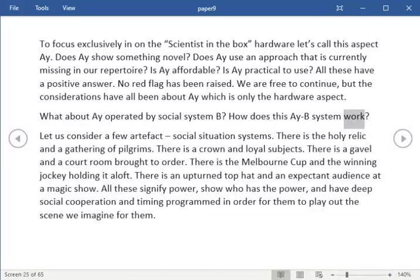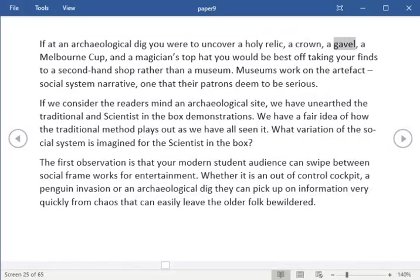Let us consider a few artifact social situation systems. There is the holy relic and a gathering of pilgrims. There is a crown and loyal subjects. There is a gavel and a court room brought to order. There is the Melbourne cup and the winning jockey holding it aloft. There is an upturned top hat and an expectant audience at a magic show. All these signify power, show who has the power, and have deep social cooperation and timing programmed in order for them to play out the scene we imagine for them. If at an archaeological dig you were to uncover a holy relic, a crown, a gavel, a Melbourne cup, and a magician's top hat you would be best off taking your finds to a second-hand shop rather than a museum. If we consider the reader's mind an archaeological site, we have unearthed the traditional and scientist-in-the-box demonstrations. We have a fair idea of how the traditional method plays out as we have all seen it. What variation of the social system is imagined for the scientist-in-the-box?